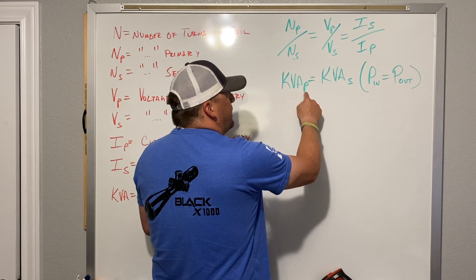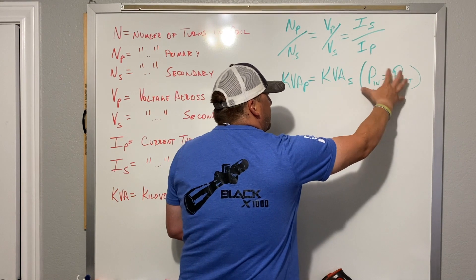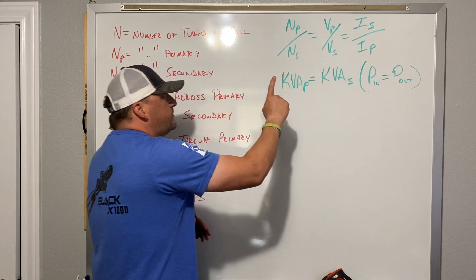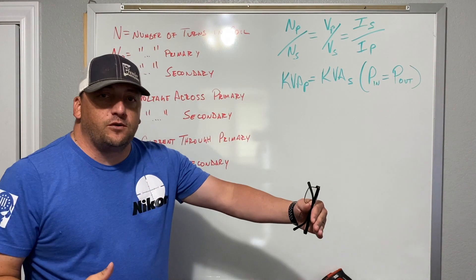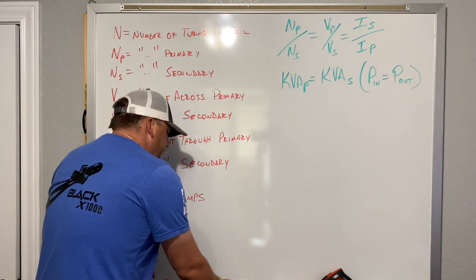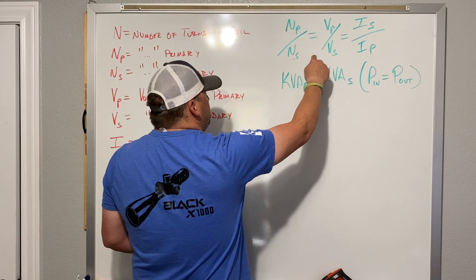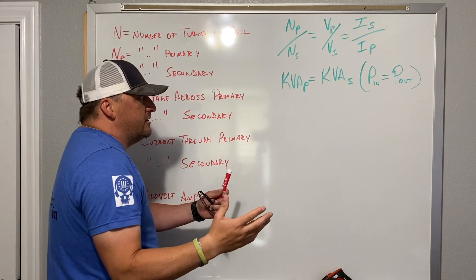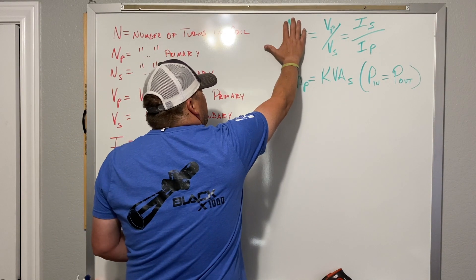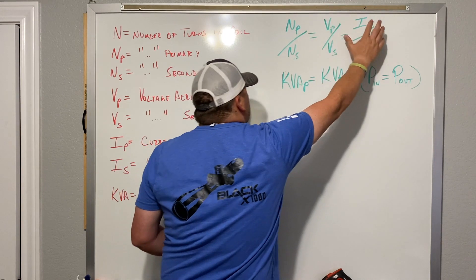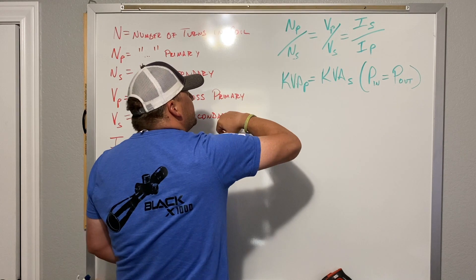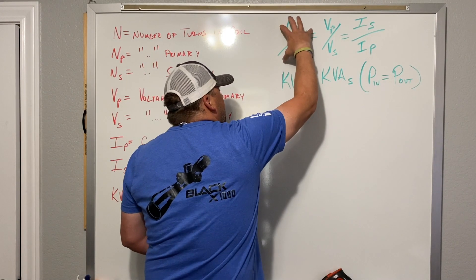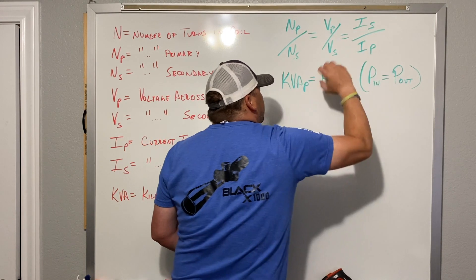We also have KVA primary equals KVA secondary. This is really just saying power in equals power out — whatever we put in, we get that much out. Because this is a transformer, it will change the voltage from primary to secondary. Looking at the relationship as ratios: NP over NS, VP over VS, and IS over IP — these are all equal to one another. Whatever NP divided by NS is, you're going to get those same numbers when you divide VP by VS or IS by IP.